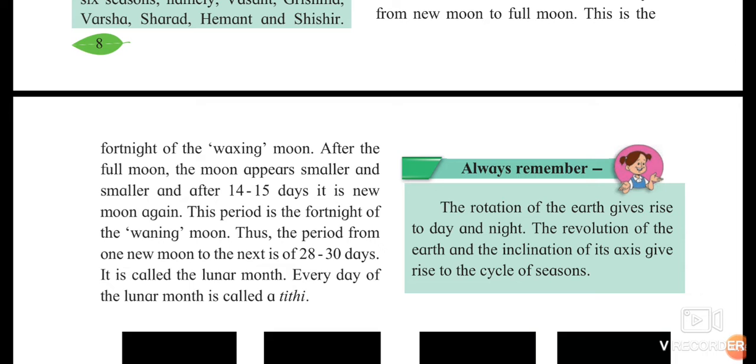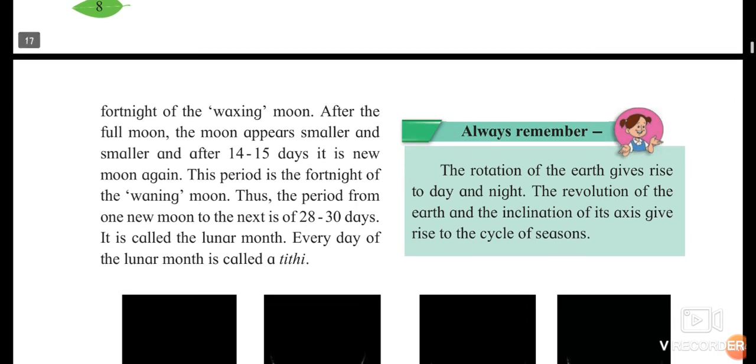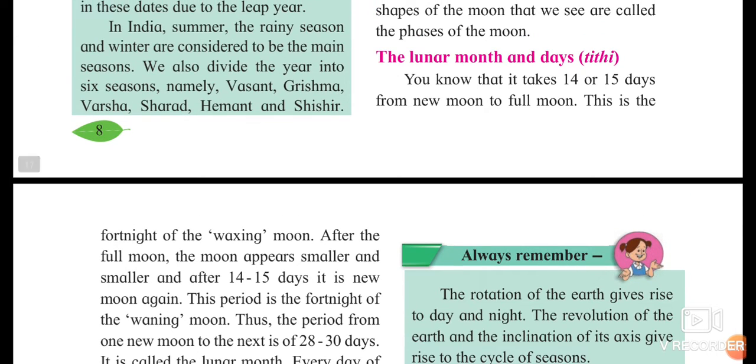We have seen about the ritu chakra also, the cycle of six seasons. You can see over here: Vasant, Grishma, Varsha, Sharad, Hemant, and Shishir. The cycle of these six seasons is called ritu chakra.